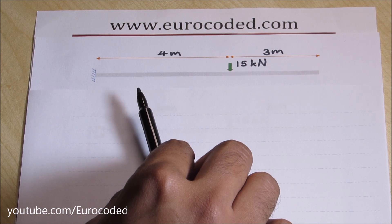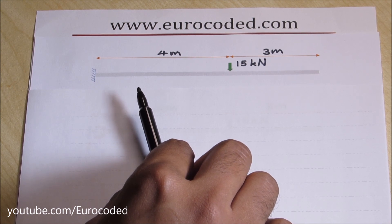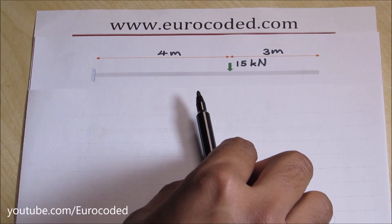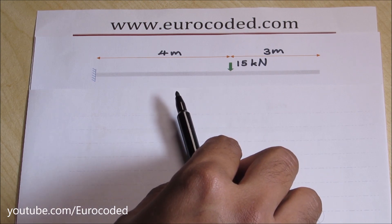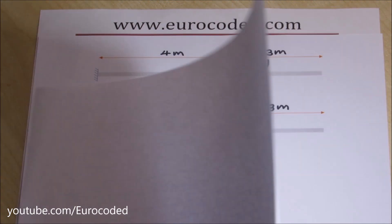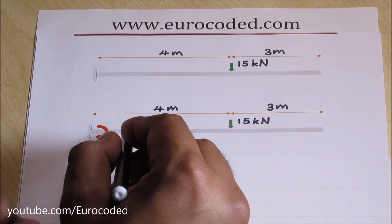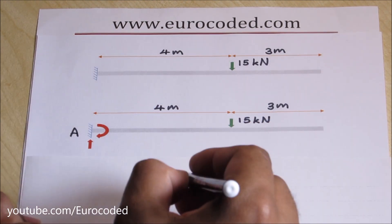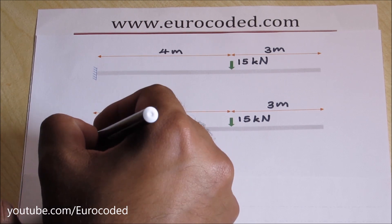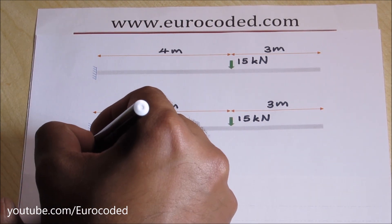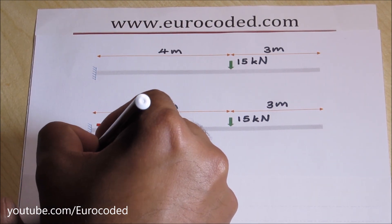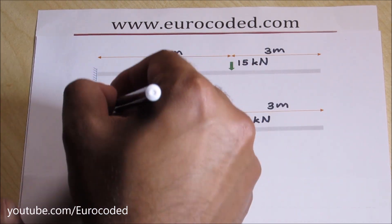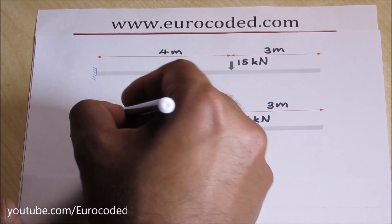Let's determine the reactions by looking at the overall equilibrium of the beam. First I'm going to determine what kind of reactions we have. In this case there is only support A, so there would be a vertical reaction at A, RA, and a bending moment at MA.